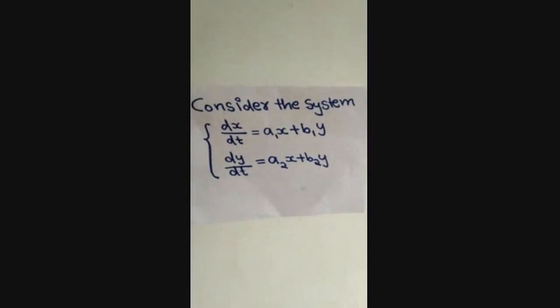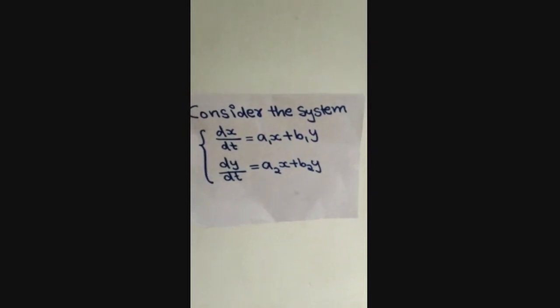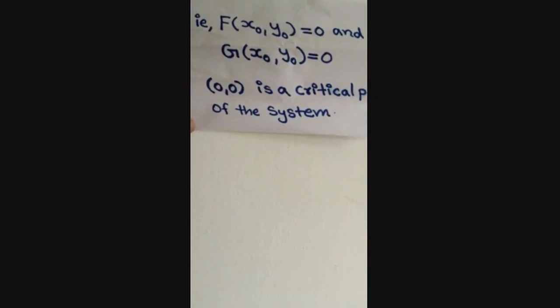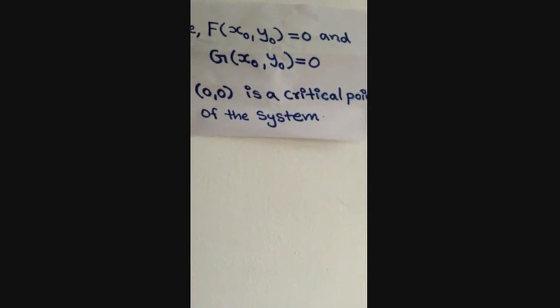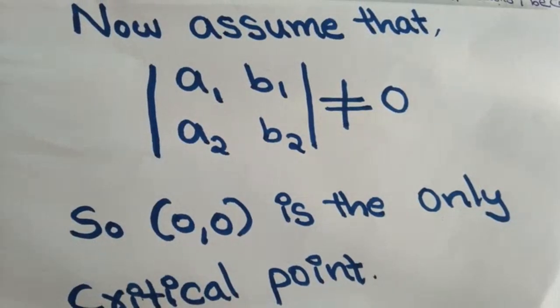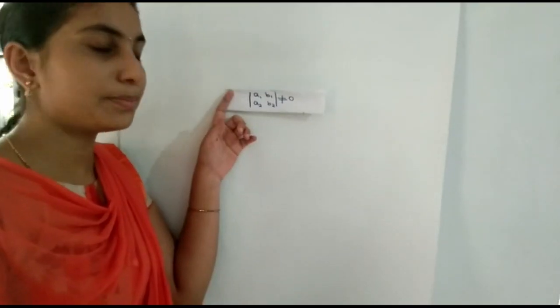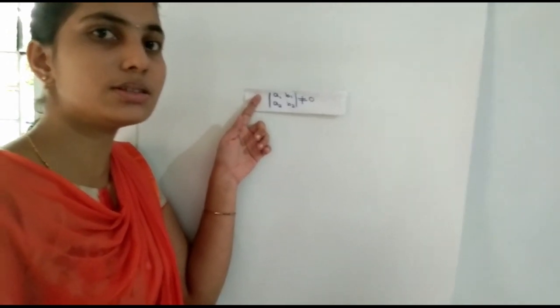Let us consider the system dx/dt = a1x + b1y, dy/dt = a2x + b2y. First, we have to find the critical point of the system — that is, the point (x0, y0) at which both f and g vanish: f(x0, y0) = 0 and g(x0, y0) = 0. Obviously, the origin (0,0) is a critical point. Now, assume that the determinant |a1 b1; a2 b2| is not equal to 0, which gives (0,0) as the only critical point.